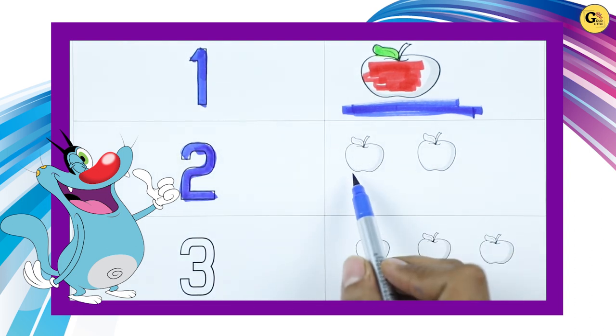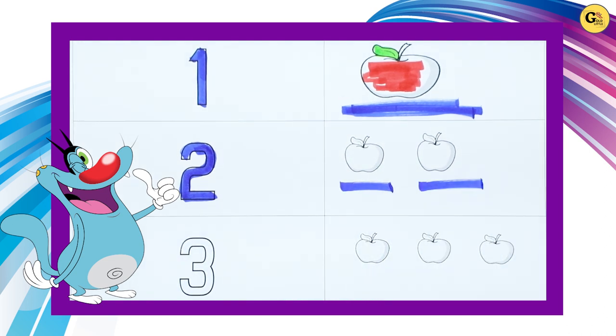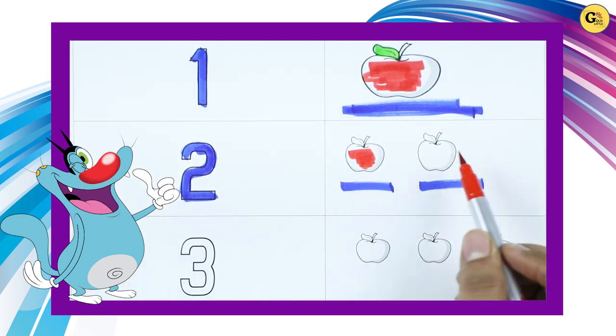How many apple here? 1 apple, 2 apple. It's 2 apples. Red color, 1 apple.